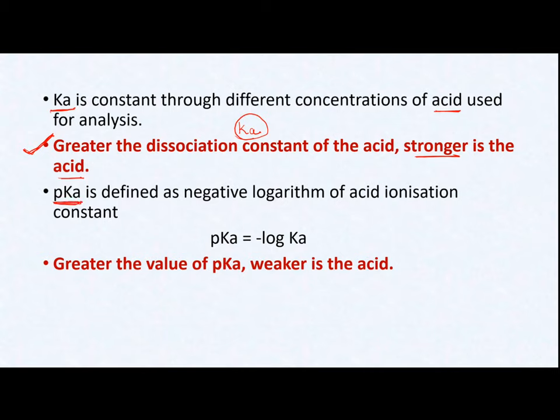Generally, when we find Ka from this ratio, the value of Ka is very small, making it difficult to use in further calculations. So generally, instead of using Ka, we use another form of the dissociation constant, which is pKa. pKa is nothing but the negative log of Ka.